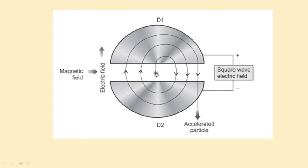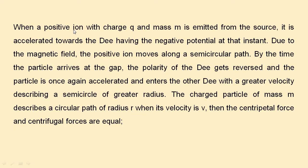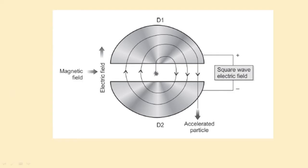From this point, the charged particle starts. You can assume that when a positive ion with charge Q and mass M is emitted from the source, it is accelerated toward the D having the negative potential at that instant. Due to the magnetic field, the positive ion moves along a semicircular path. Each D is actually a hollow half-sphere.